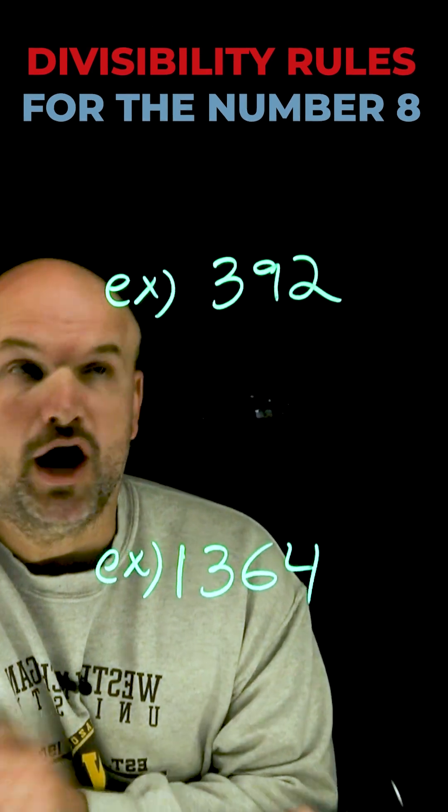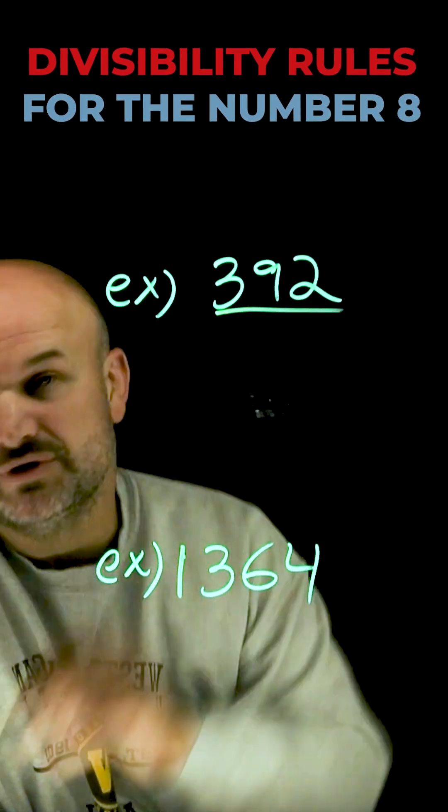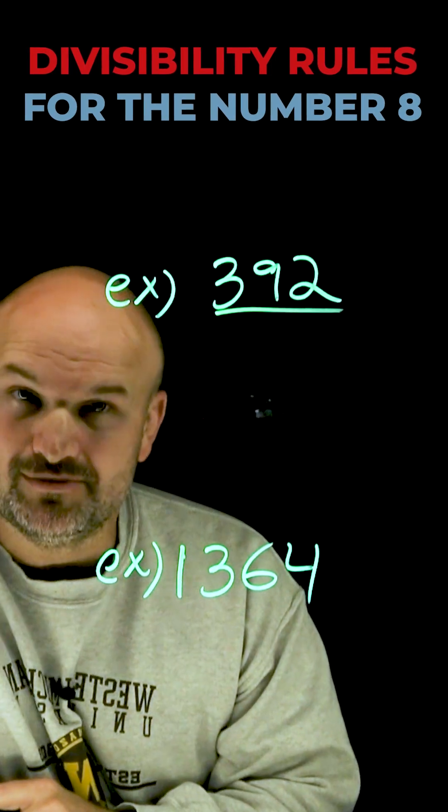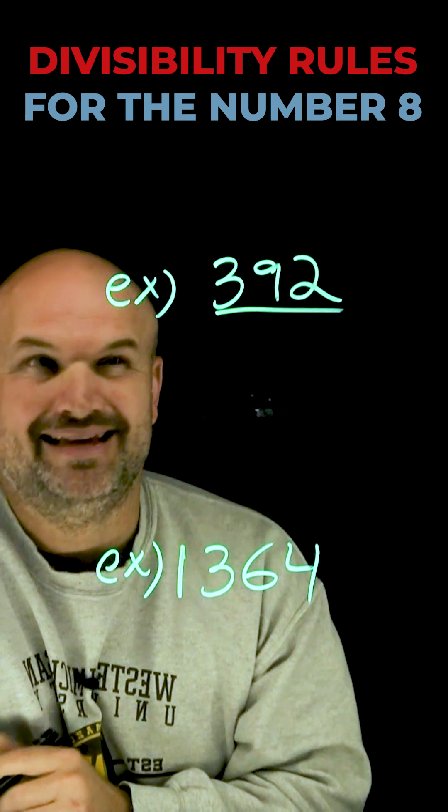To determine if a number is divisible by 8, all we simply need to do is look at the last three digits. If those last three digits are 000, or a number divisible by 8, the whole number is divisible by 8.